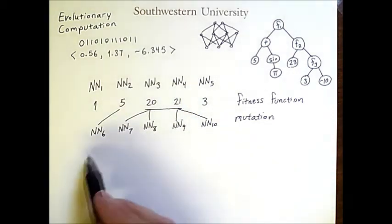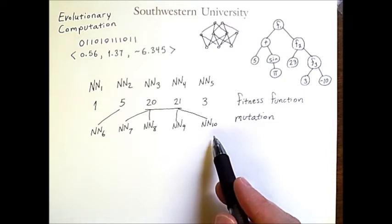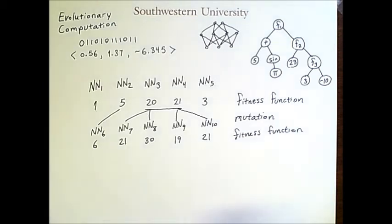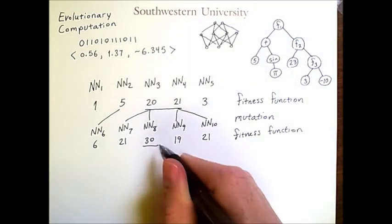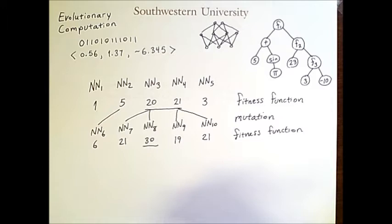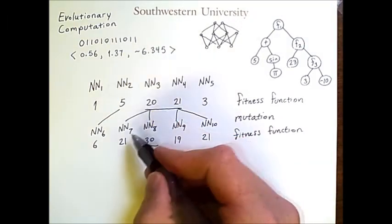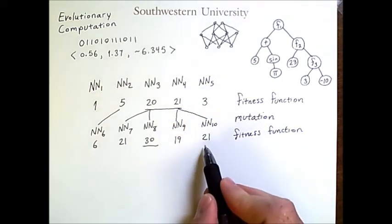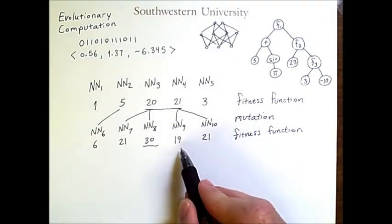If we then evaluate this new population, let's say we get the following values. This value is better. This value is also better than that of its parent, but not better than something we had previously seen in the population. This value did not move up, and this one actually went down.